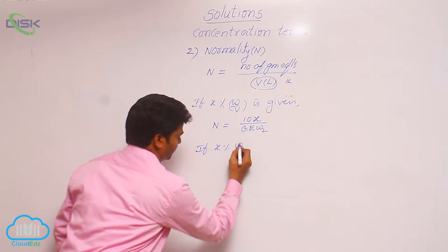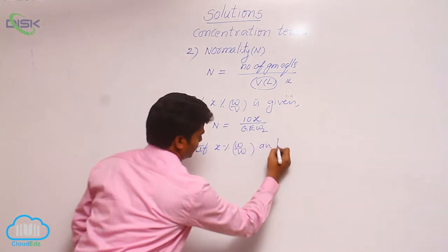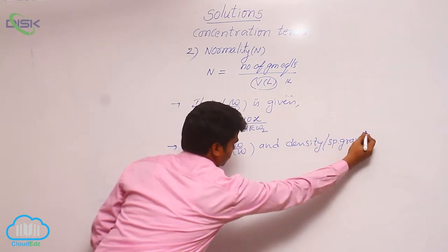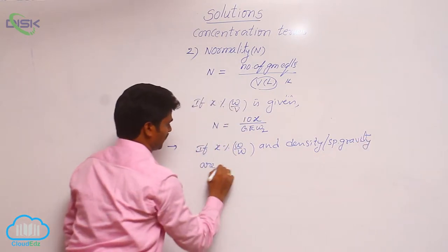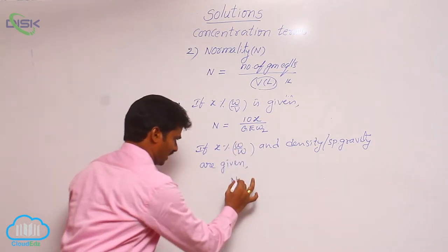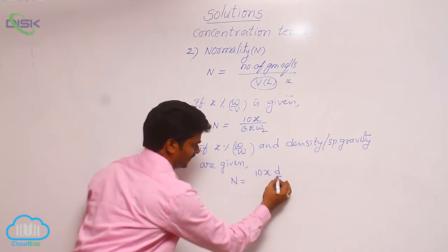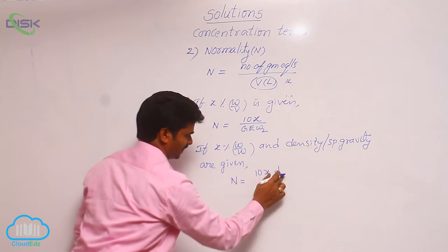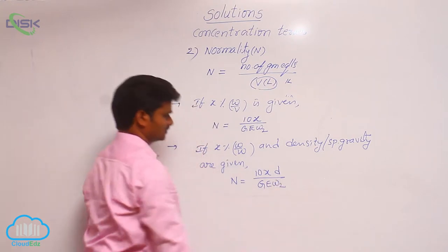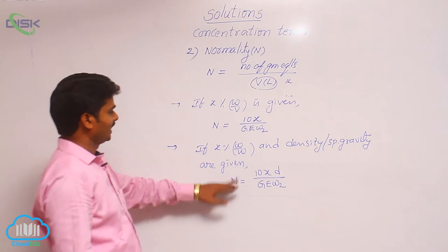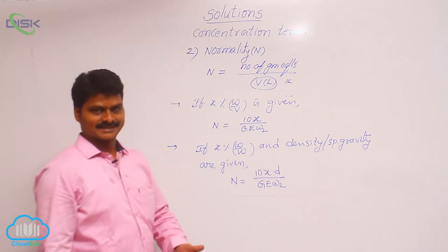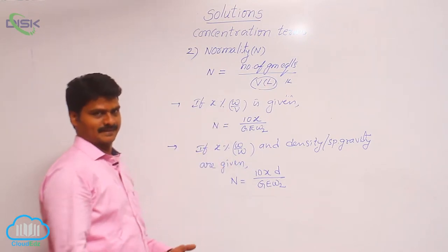If X percentage w/w and density (also called specific gravity) are given, then the formula to find normality is: normality = 10 × X × D, where D is the density or specific gravity of the solution, divided by gram equivalent weight of solute. This formula is used when percentage w/w and density information are given.